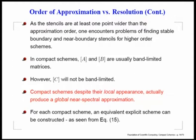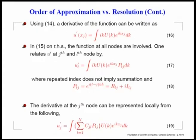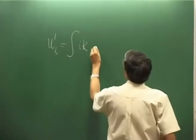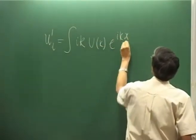What we are essentially saying is that for any generic compact scheme, we can construct an equivalent explicit scheme — that is the connection between an implicit and an explicit scheme. For example, if you are trying to obtain the first derivative, it is equivalent to multiplying the Fourier-Laplace amplitude u(k) by simply ik. What we are trying to find out is the derivative at the l-th node, so we should be writing the integral of ik times u(k) times e to the power ik x_l dk. This is the spectral representation.